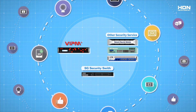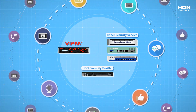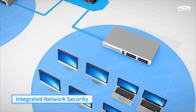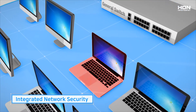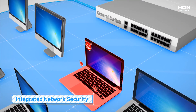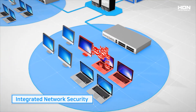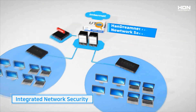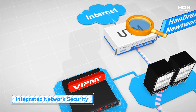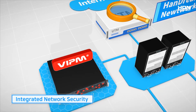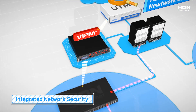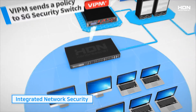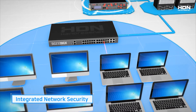VIPM and SG Security Switch will be the core of your network security solution. While a normal switch can identify the IP address causing a problem, it cannot prevent the problem in advance. Through a combination of SG Security Switch and VIPM, VIPM will check the network condition automatically and take proper action, and SG Security Switch will block any infected devices automatically without administrator intervention.